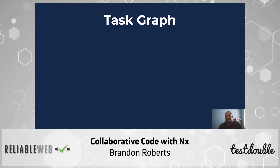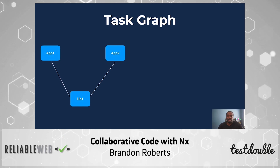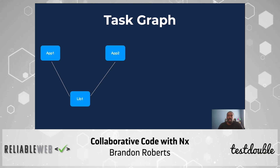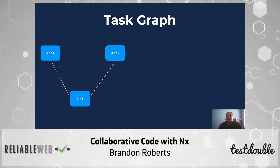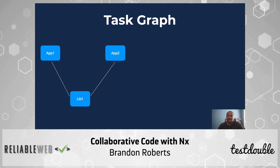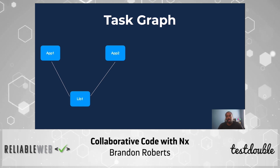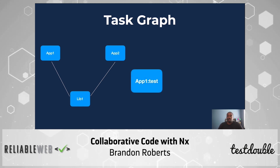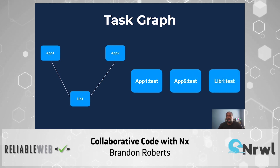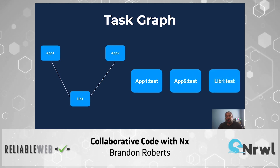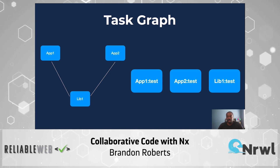Next up is the task graph. NX uses the project graph to create a task graph. Any time you run a command or task, NX creates this task graph and then executes the tasks in it. In some cases these tasks can be run in parallel. This example shows application1, app2, and lib1, which are independent of each other in testing, so they can be run in parallel.